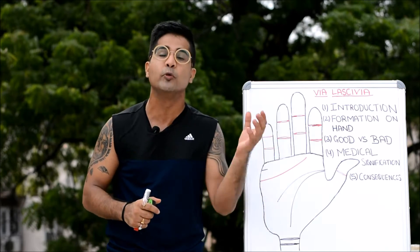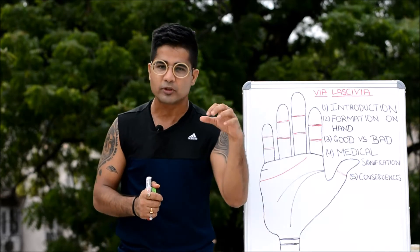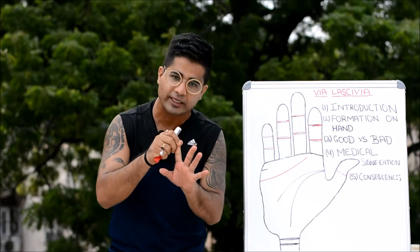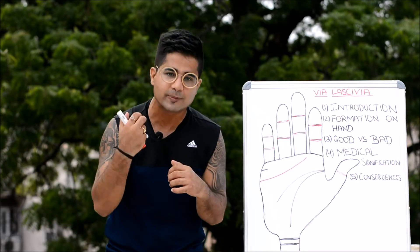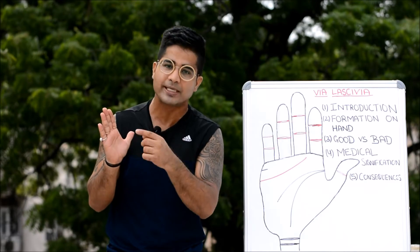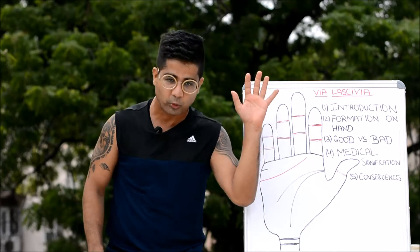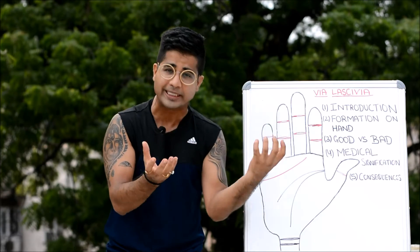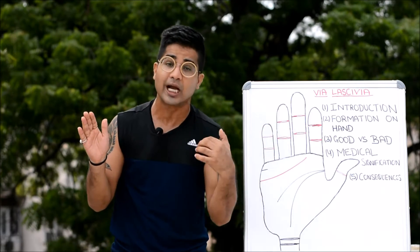Since this topic is going to be very interesting and a lot of new people are going to watch this, here is a quick recap of the introduction to palmistry. The whole science of palmistry can be divided into two categories: one is chirognomy, which is the study of the structure of the hand — the shape, length, and broadness of your fingers and palm, telling about someone's inherent personality. The other is chiromancy, which is the study of the lines of your hand, used for fortune telling — past, present, and future. Combining these two is known as kerosophy.